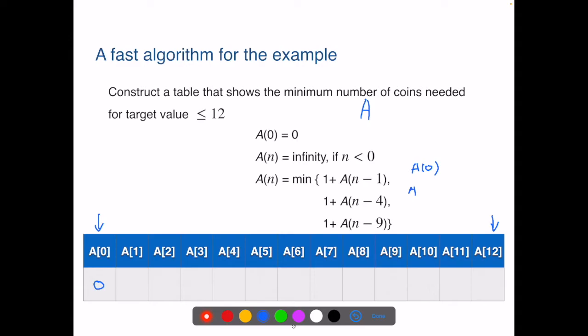When n is 1, the options are A(0), A(-3), and A(-8). We can ignore all the ones with negative input. So that'll be A(0) plus 1, so A(1) will be 1. Now A(2). So the options will be A(1), A(-2), A(-7). So we can ignore the negative ones and then we know A(2) will be A(1) plus 1. So that'll be 2. Now A(3). So we know the answer would be similarly A(2) plus 1. So A(3) will be 3.